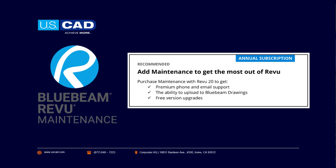Also, don't forget about maintenance with the software — it's a consideration when choosing which version you want. Bluebeam Revu is a perpetual license, but you can include maintenance to stay up to date with the versions being released. It also gives you access to Bluebeam Drawings, which is a way to view your PDFs from any device, and it gives you premium phone and email support.